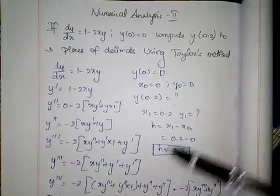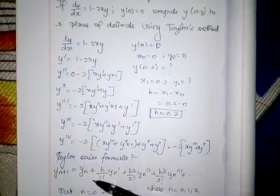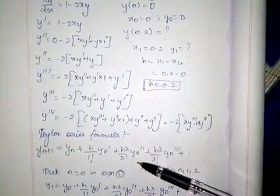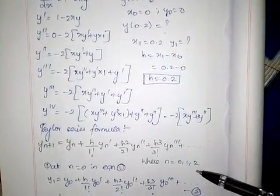For Taylor series method, the formula is y(n+1) equals yn plus h/1! times y'n plus h²/2! times y''n and so on, where n equals 0, 1, 2.